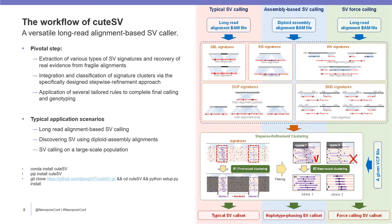Qtai3 mainly contains three steps. Firstly, Qtai3 uses multiple signature extraction methods to collect the signatures of various types of structural variations. Furthermore, it combines short insertions and deletions from fragile alignments to recover the evidence of real structural variations. Secondly, a clustering and refinement approach is designed to integrate chimeric aligned reads in local regions and further refines the cluster to precisely distinguish the signatures from high-to-erroneous variants.